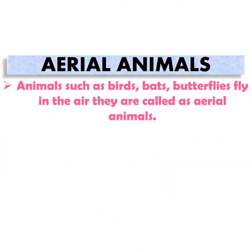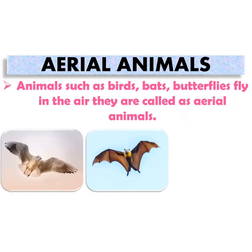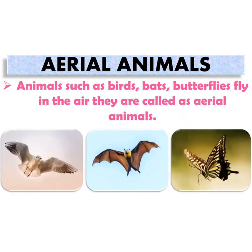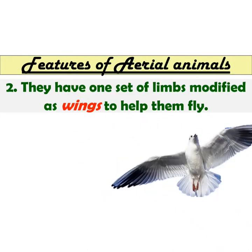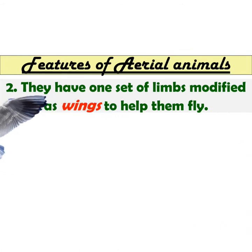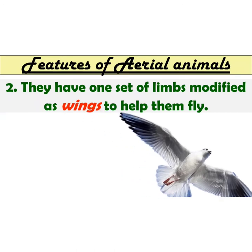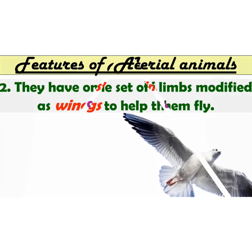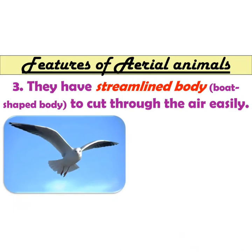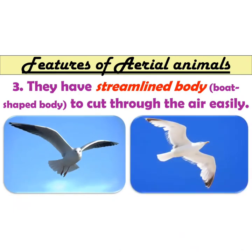Aerial animals: animals such as birds, bats, and butterflies fly in the air and are called aerial animals. Some of their adapted features are: they have one set of limbs modified as wings to help them fly. They have a streamlined body shape to cut through the air easily. We have now learnt about adaptation for habitat.